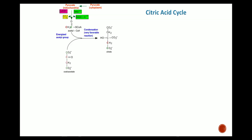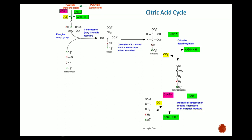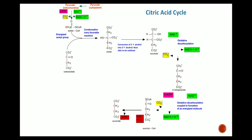Recapping the citric acid cycle step by step: pyruvate is converted into acetyl CoA, liberating CO2 and forming NADH. Oxaloacetate and acetyl CoA condense to form citrate. Citrate converts to isocitrate — tertiary to secondary alcohol conversion. Isocitrate converts to alpha-ketoglutarate via oxidative decarboxylation — NADH is formed and CO2 is liberated. Alpha-ketoglutarate converts to succinyl CoA — again oxidative decarboxylation, CO2 liberated, NADH formed.